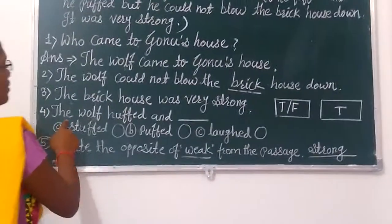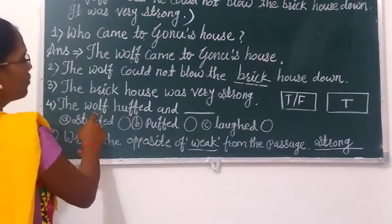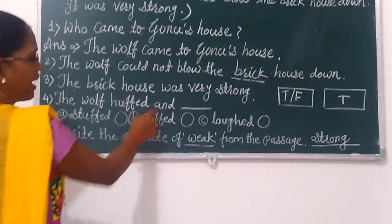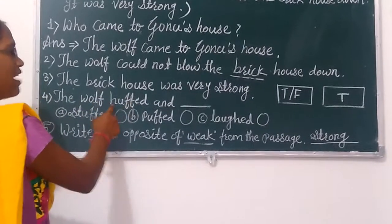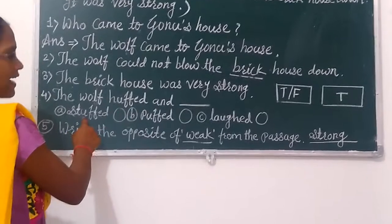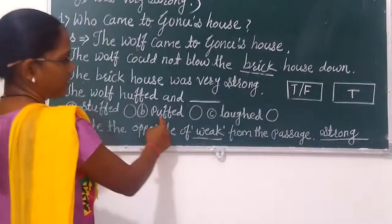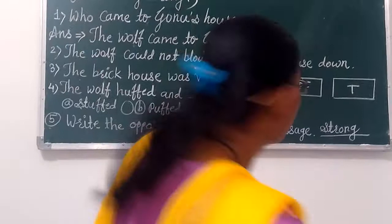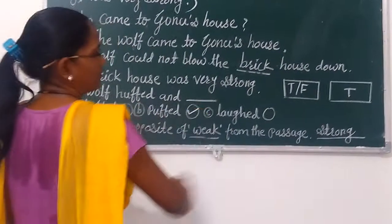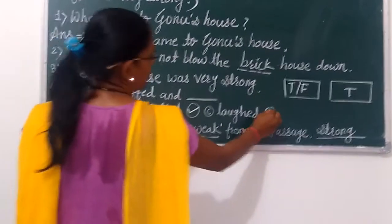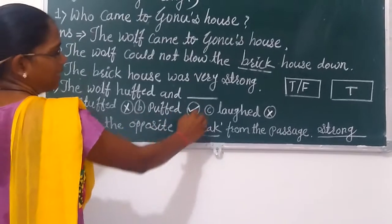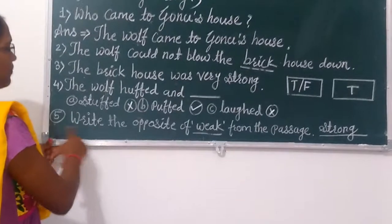Now number four: The wolf could not... You choose the correct option. The wolf could not blow the house down — that is correct, so you mark the right answer. The other option is wrong, so you write the wrong mark there.